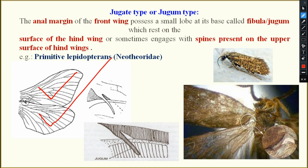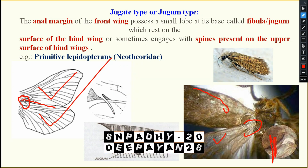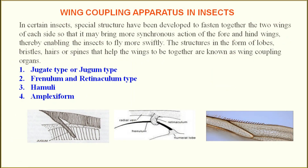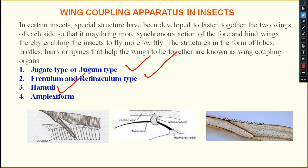The fore wing and hind wing are united with each other by some structure. Those structures or apparatus are known as wing coupling apparatus. The structure joining the two wings — fore wing and hind wing of each side — is known as wing coupling apparatus. Structures in the form of lobes, bristle, hair, or spine that help the wings stay together are known as wing coupling apparatus. There are four types: jugum type, retinaculum or frenulum type, hamuli type, and amplexiform type.